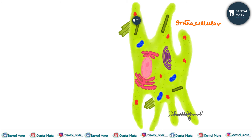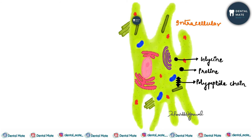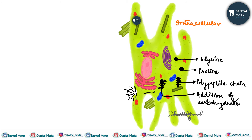Let us see how intracellular and extracellular collagen fibers are produced. In the intracellular form, there are numerous proteins present in the cytoplasm such as glycine, proline, and certain polypeptide chains. First, there is addition of carbohydrate to the polypeptide chain. After that this is removed or sent out from the cell in the form of procollagen.